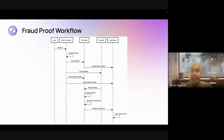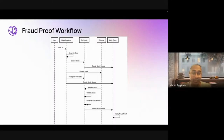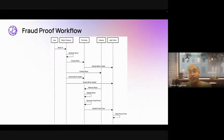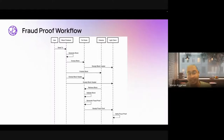During that process you can detect invalid state transitions. If there is one, you would generate a fraud proof and gossip it to clients. Ideally, a light client who has no state at all should be able to use this fraud proof to verify and run exactly one state transition, and verify that state transition was indeed fraudulent. That's the workflow.